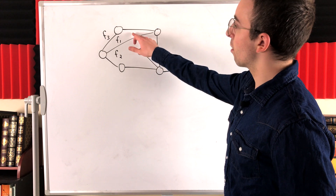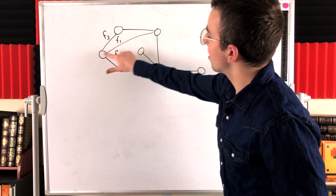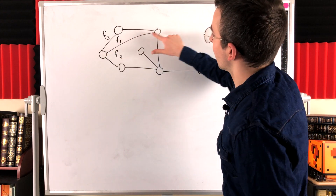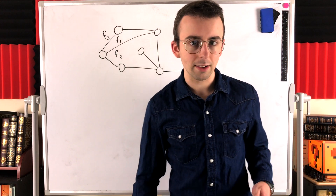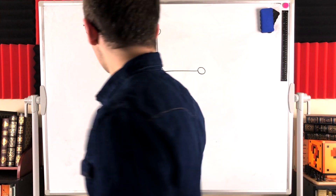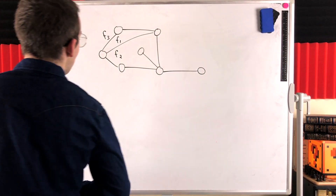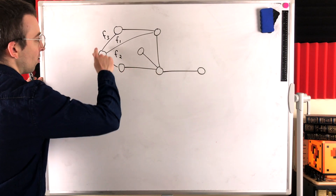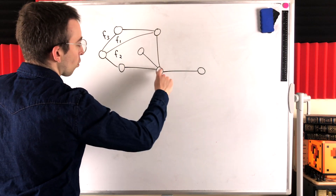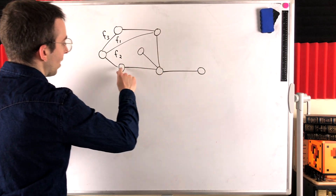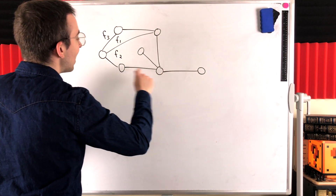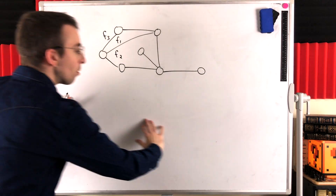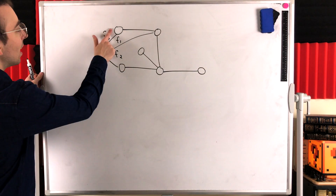So the boundary of F1, for example, is this 3-cycle — those are the vertices and edges incident to the face F1. The boundary of F3 is all of these vertices and edges here that I'm tracing with my finger. They're the edges and vertices incident with this exterior region, F3.